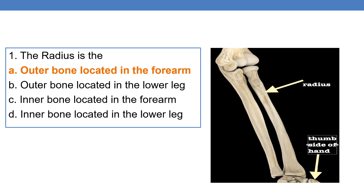Now coming to questions from Anatomy. The first question is: the radius is the outer bone located in the forearm, outer bone in the lower leg, inner bone in the forearm, or inner bone in the lower leg? Radius is the outer bone located in the forearm. Here you can see the radius on the thumb side of the hand. This is the ulna on the other side.